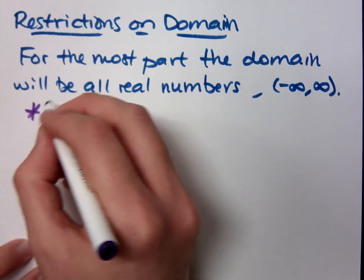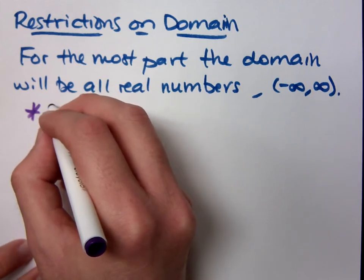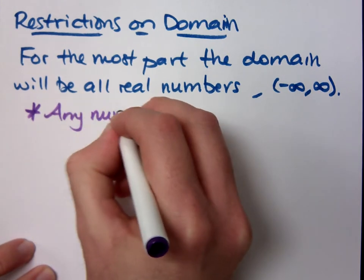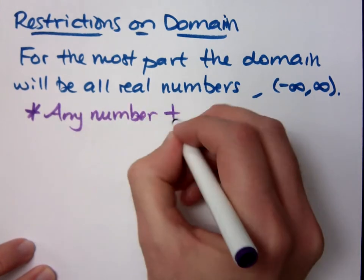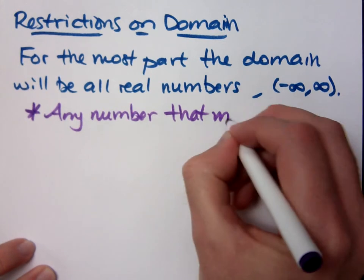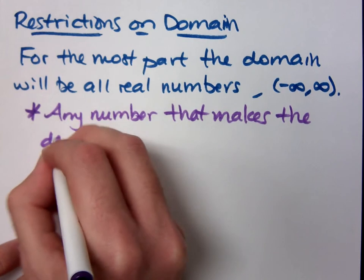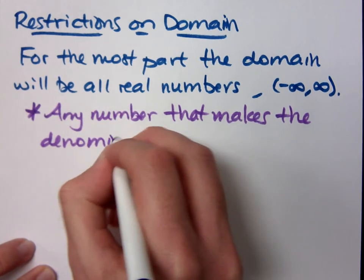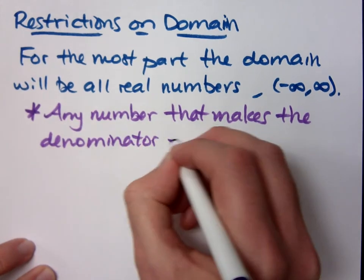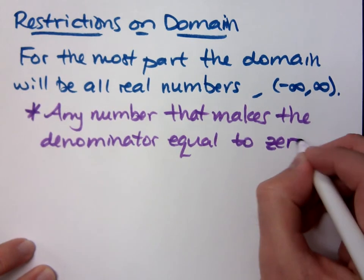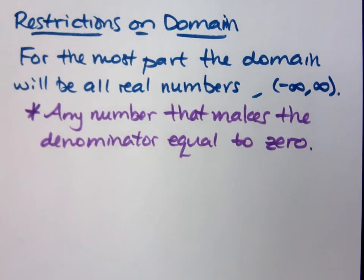A restriction will be any number that makes the denominator equal to zero. Any number that makes the denominator equal to zero will be a restriction on the domain.